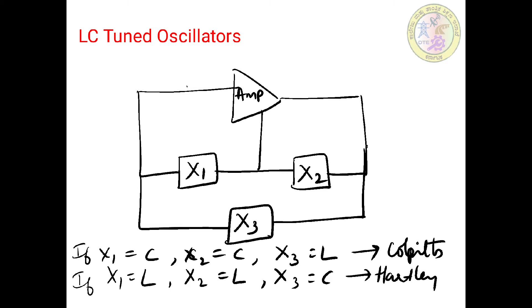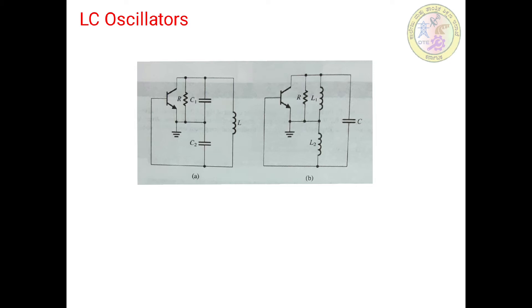Both the Colpitts and Hartley configurations utilize parallel LC circuits, also known as a tank circuit, which is connected between the collector and the base in BJT circuits. The next slide shows the configurations of the Colpitts circuit and Hartley circuit in case of BJT circuits.